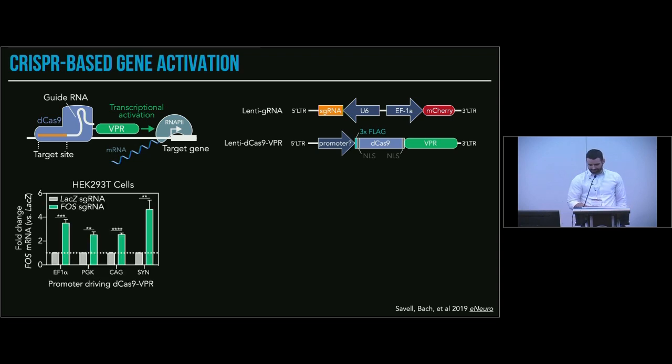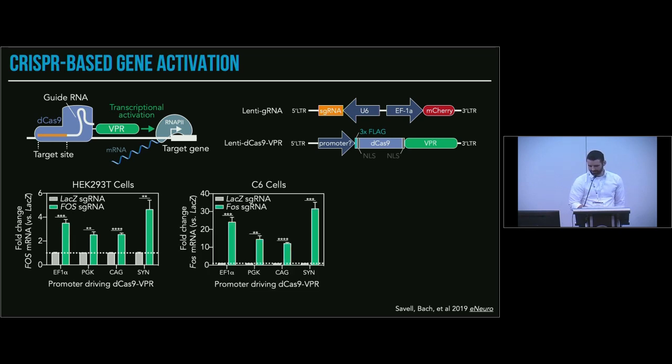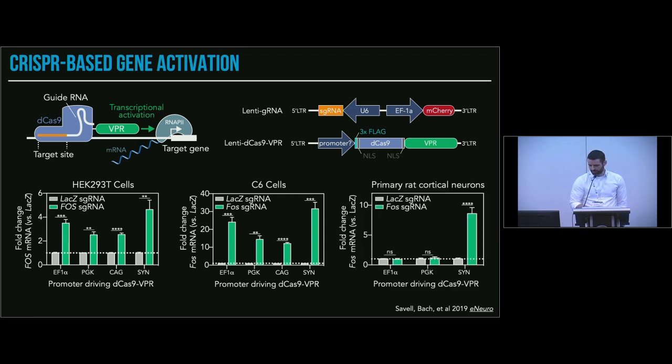We wanted to try to avoid that in neurons because it's known that this is an activity-dependent promoter. It has several CREB elements, so it can be regulated itself by activity states in neurons. There's also some evidence that the CMV promoter can be silenced by methylation. So in HEK cells, we tried a number of different promoters: EF1-alpha, PGK, CAG, and hSyn, targeting the human FOS gene. We were able to get upregulation with any of these promoters. In a rat dividing cell line, C6 cells, any of these promoters work to drive expression of the FOS gene in the rat genome. However, when we move to primary neurons, we find that only one of these, the human synapsin promoter, is effective at driving FOS upregulation.